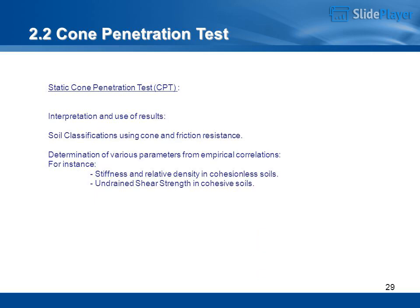Interpretation and use of CPT results: soil classification using cone and friction resistance; determination of various parameters from empirical correlations — for instance, stiffness and relative density in cohesionless soils, and undrained shear strength in cohesive soils.